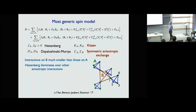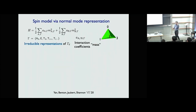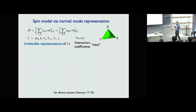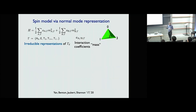Instead of working with the microscopic spin model directly, it's useful to rewrite the model using normal modes of the spins on each tetrahedron — treating each tetrahedron as a kind of molecule and using group theory, exactly as one would for vibrational normal modes. I can write down all normal modes in terms of irreducible representations of the tetrahedral group.